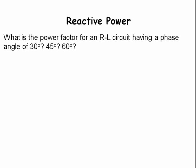What is the power factor for an RL circuit having a phase angle of 30 degrees, 45, or 60 degrees? The power factor can be calculated from the cosine of these angles. The cosine of 30 degrees is 0.866. The cosine of 45 degrees is 0.707. And the cosine of 60 degrees is 0.5.